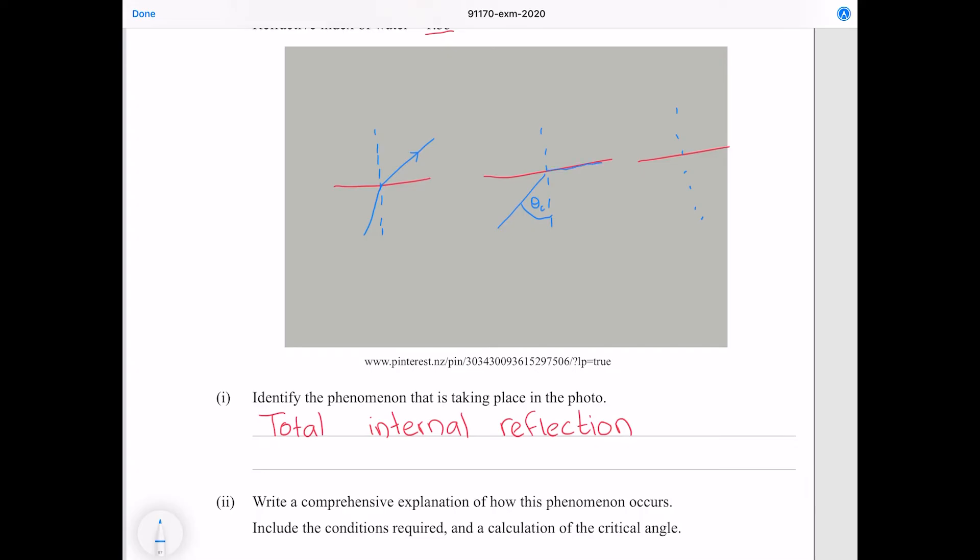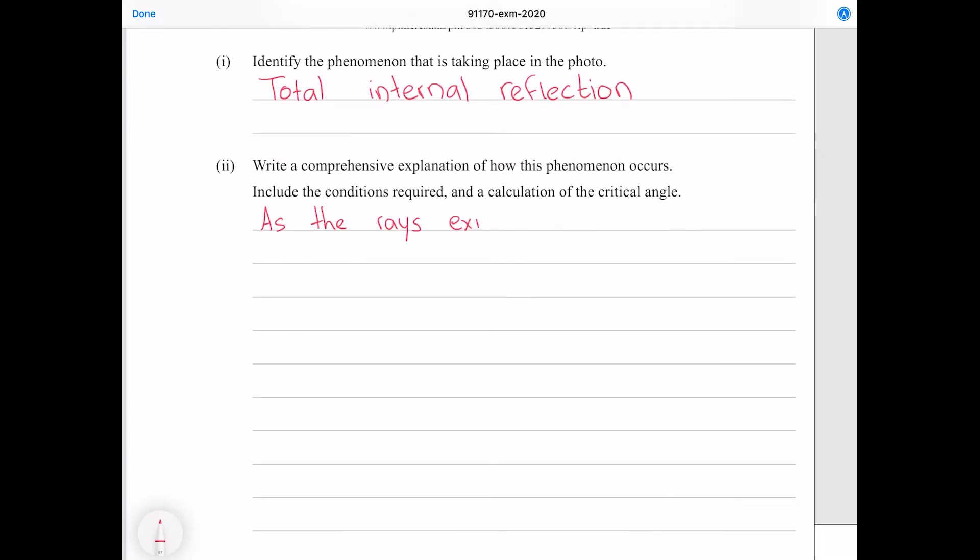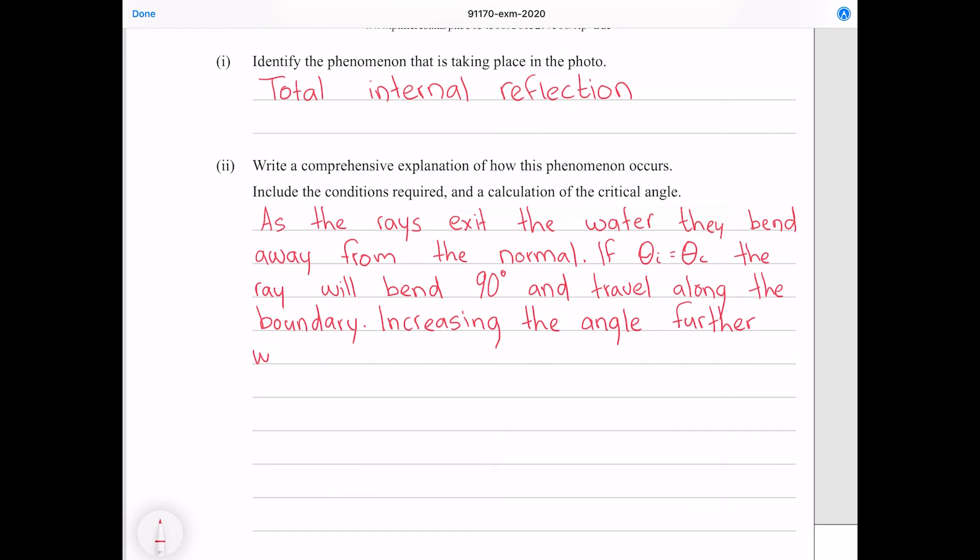At a particular incident angle however, that we call the critical angle, the ray is in fact going to bend so far from the normal line that it will in fact go along the boundary of the materials. If you were to further increase the angle of incidence then our refracted ray would disappear entirely and you would be left with just a reflection. That is the simplified picture that we give to year 12 students. So let me try put that into words. As the rays exit the water they bend away from the normal. If the angle of incidence is equal to the critical angle, the ray will bend 90 degrees and travel along the boundary. Increasing the angle further will cause the refracted ray to disappear and the ray will be totally reflected.